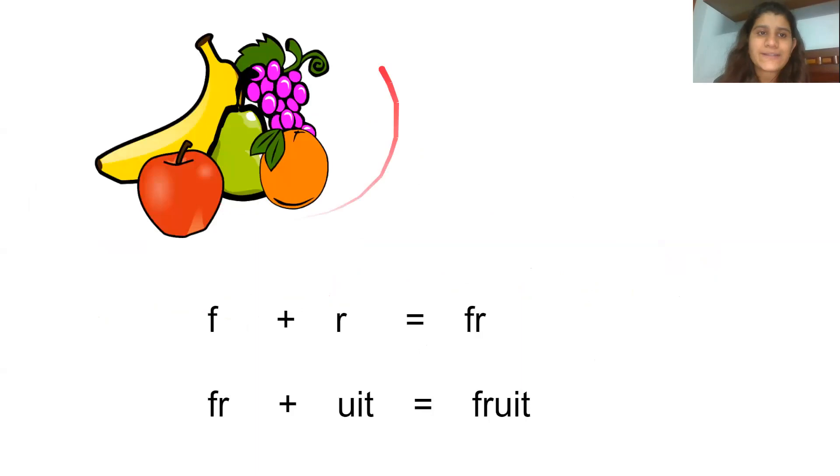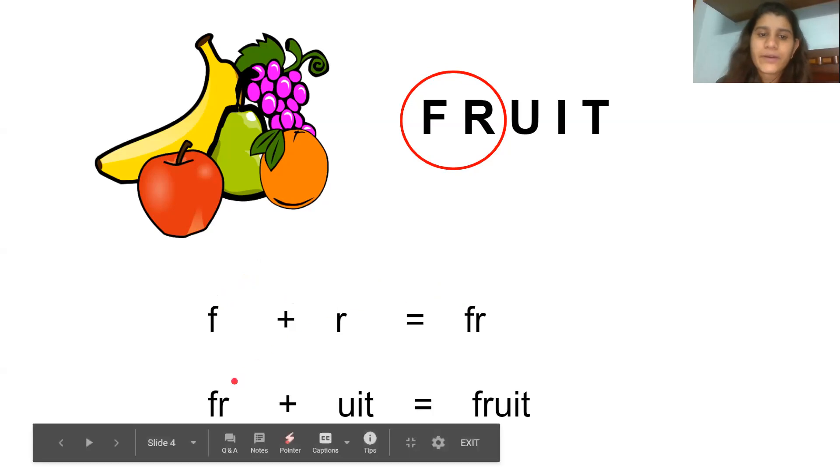So now what is this? This is the picture of, I can see an apple, banana, orange, different fruits. So I write fruits like this. Where do you hear the sound? You hear it in the beginning. Fr-oot. Fruit. So how do I make this sound? Fr. Fr. Fr-oot. Fruit. Now see. Fr-oot. Fruit.